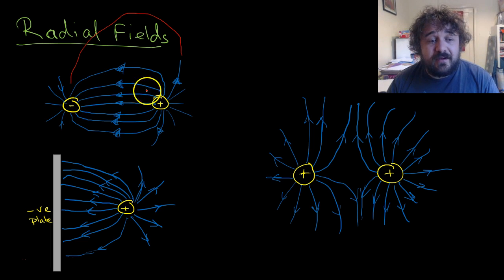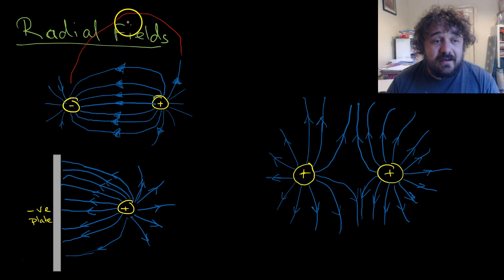We see the fields join up between the two. These are the arrowheads pointing the lines. That way, if a positive particle flew in from above here, it would shoot off towards the negative particle.